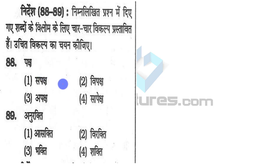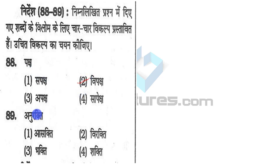Now you have to tell antonyms. 'Paksh' means taking somebody's side — 'vipaksh' is opposition. So the antonym for paksh is going to be vipaksh. 'Anurakti' means attachment, and the antonym of anurakti is vipaksh — the opposite of something.